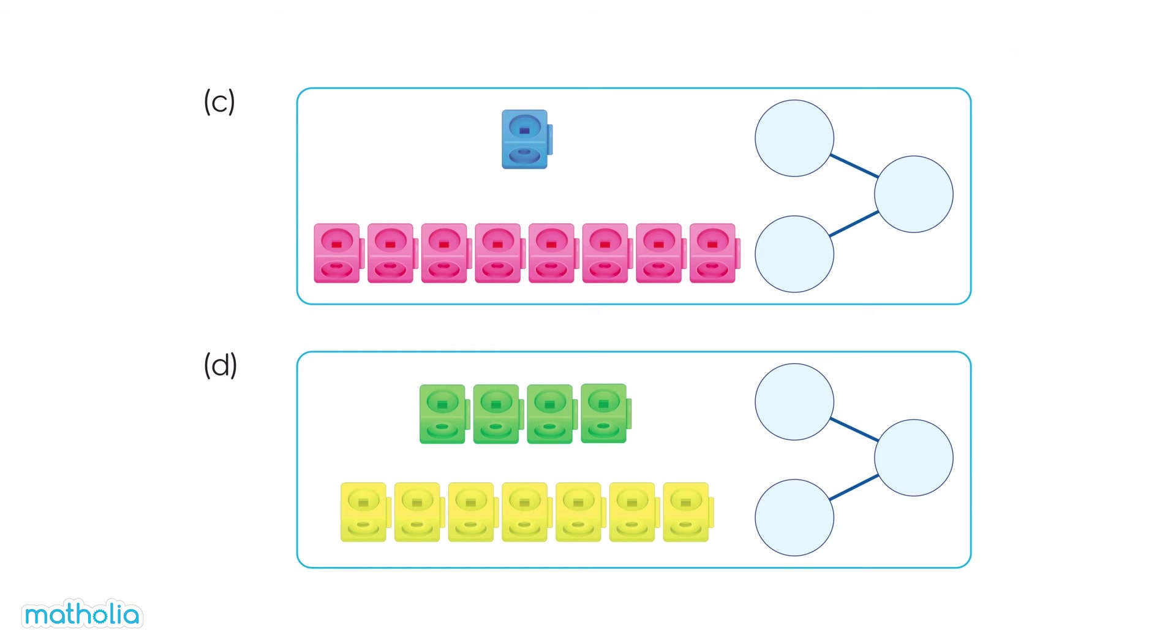Part C. Look at the cubes. There is one blue cube and eight pink cubes. One and eight make nine.